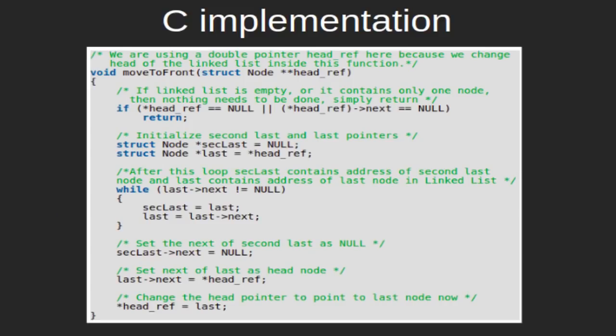Let's see the C implementation of the above algorithm. The return type of this function is void since it will not return anything — it will only modify the head of the given linked list. The function takes only one argument, the head of the linked list. Note that we are using a double pointer while passing head because we change the head of the linked list inside this function. If the linked list is empty, meaning head is null, or if the linked list contains only one node, we do nothing and simply return to the main function.